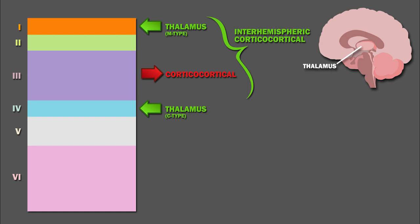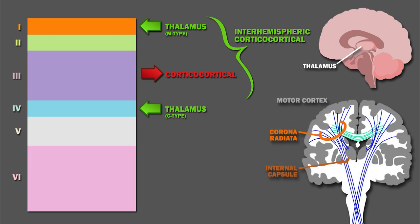Betz cells in layer 5 are important for voluntary motor control, and this layer is especially well developed in motor cortical areas. Betz cells are found in the primary motor cortex, and their axons travel through the internal capsule, then through the brainstem and spinal cord, forming the corticospinal tract.